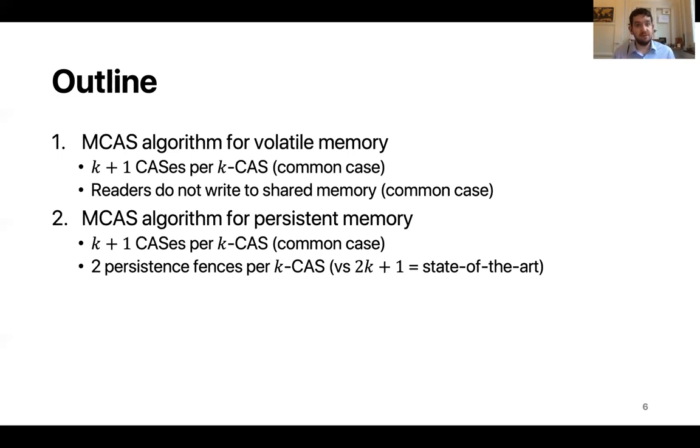Our second contribution is to extend our algorithm to work with persistent memory. This extension has the same low complexity as before, k plus 1 CASs, and it additionally requires only two persistent fences for a k word MCAS. This is much lower than the state of the art which requires 2k plus 1 persistent fences for every call to k word MCAS.